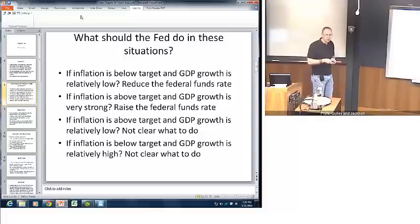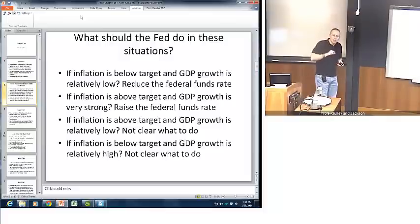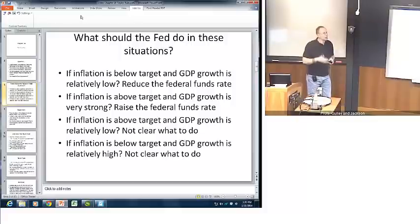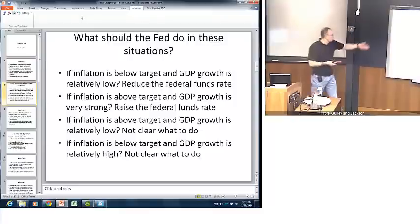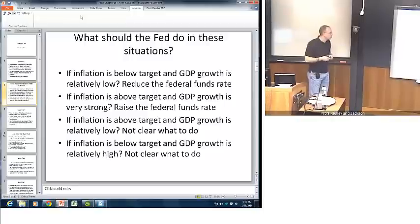But now consider the second two scenarios. What if inflation is above the Fed's objective, but GDP growth at the same time is relatively low? Now it's not quite so clear because if the Fed decides to combat the inflation by pursuing a contractionary policy, that would tend to reduce aggregate demand, and that in fact would work to reduce inflation, but it also might at the same time work to reduce GDP growth. So there could be some tension there. Likewise, in this last scenario, if inflation is below target and GDP growth is relatively high, it's not clear what the Fed's actions should be relative to its dual mandate.